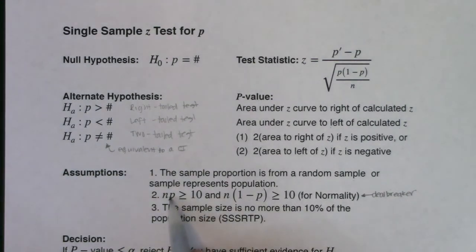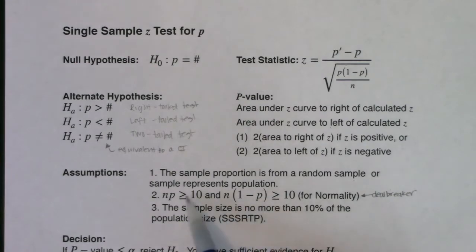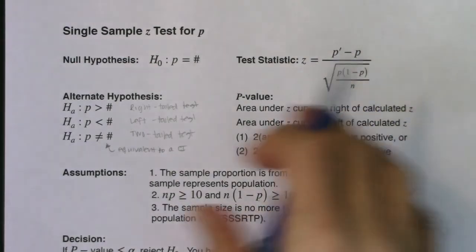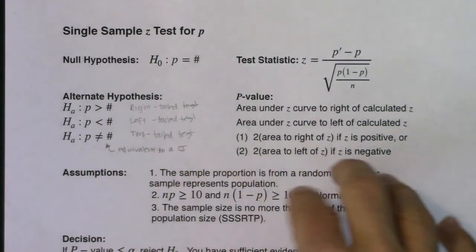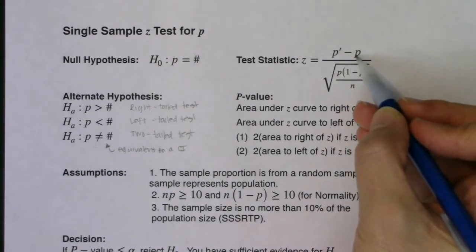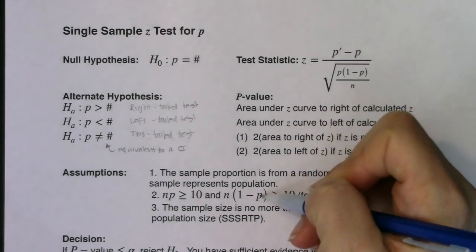The key distinction from chapter 8 is that the normality check doesn't say p-prime anymore — it says p. We get p from our null proportion because that's the one we're assuming to be true. In hypothesis tests, you'll get both a sample proportion and a null proportion, so we must distinguish which is which so we can plug the right number into the formula.